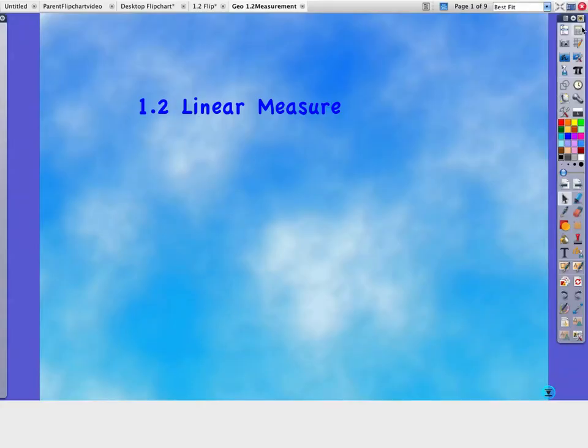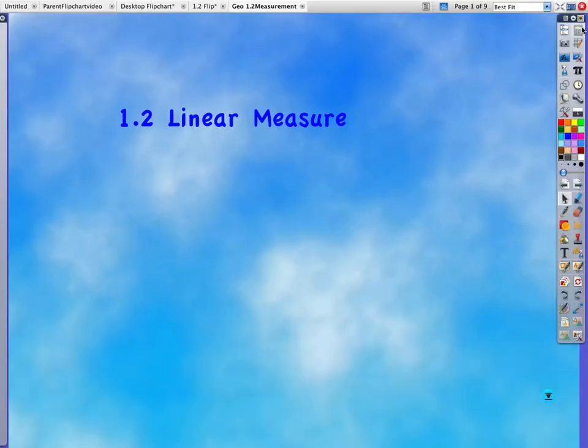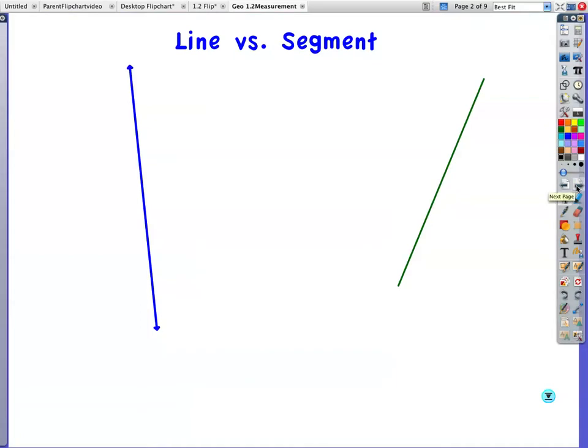Okay, this is section 1.2, Linear Measure. Linear has the word line in it, so we're going to be working with lines. And measurement, there are lots of jobs out there where you're going to need to work with measurement. This, in general, seems like on the surface a pretty easy section, but I've had students that have really struggled with this. So please pay attention throughout this particular lesson.